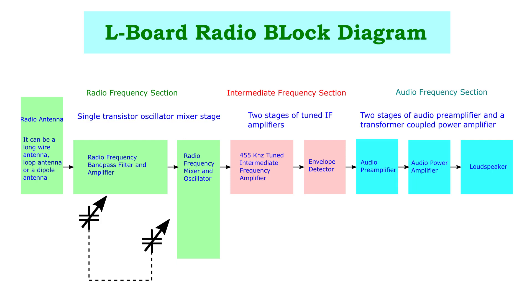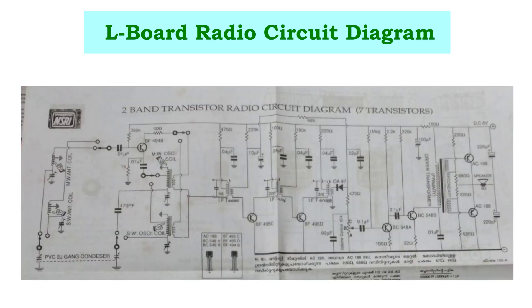Block diagram of a superheterodyne radio receiver: there are many functional circuit blocks in a superheterodyne radio receiver. The three different frequency stages present are the radio frequency stage, the intermediate frequency stage, and the audio frequency stage. The radio frequency stage receives the signal from the antenna. It collects or tunes to the radio signal of a desired frequency from the antenna and mixes it with a locally generated oscillator signal.